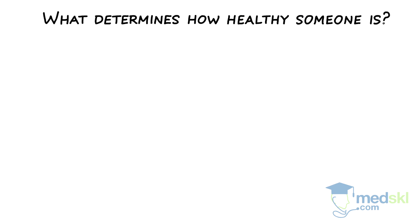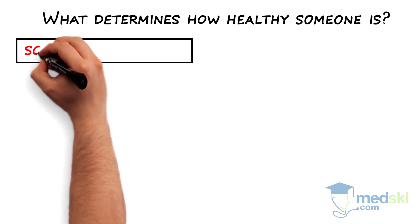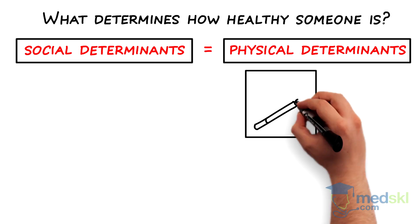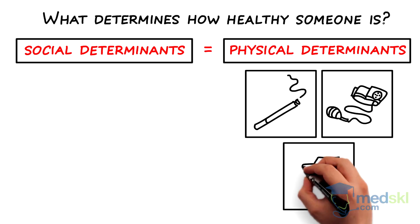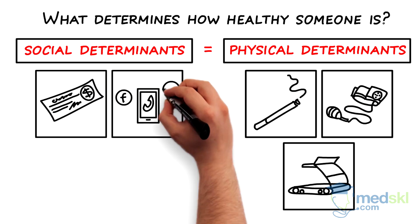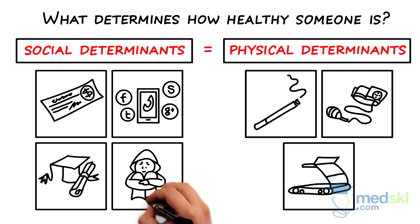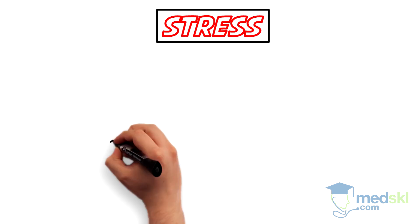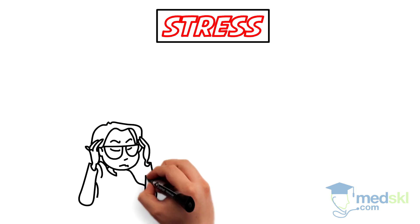The determinants of health also include social factors. Many of these social determinants of health are as important as physical factors like smoking status, blood pressure, and exercise. They include income, social support networks, education, and social exclusion. But why do these social factors matter so much?